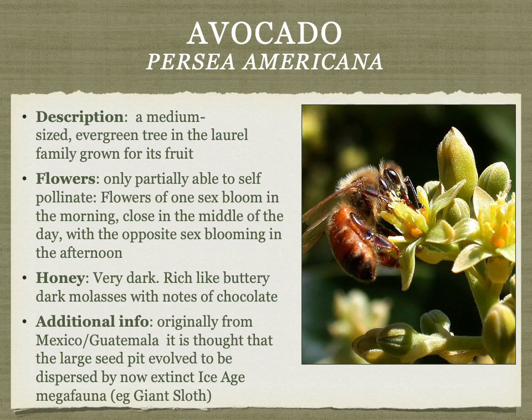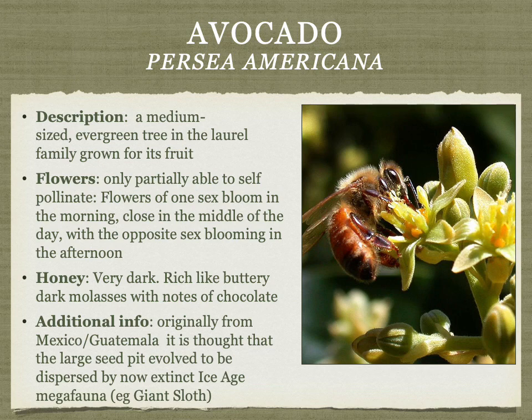Avocado flowers are interesting: flowers of one sex bloom in the morning and close midday, while the opposite sex blooms in the afternoon. Different varieties have different sexes blooming at different times, so avocado farmers must plant the right strains in proximity for pollination. The honey is a wonderful dark honey — rich, buttery, dark molasses, with notes of dark chocolate. Originally from Mexico and Guatemala, avocados have a very large seed pit that may have been dispersed by now-extinct Ice Age megafauna like the giant sloth, which would swallow the fruit whole and deposit the seed elsewhere.